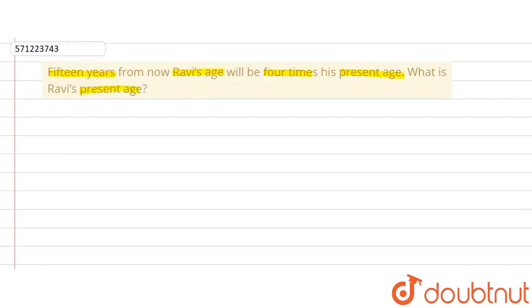So let's do this question. In such type of question what we do is we assume the present age to be something. So let us assume Ravi's present age be x years. Now we will follow the condition which has been given in the question.